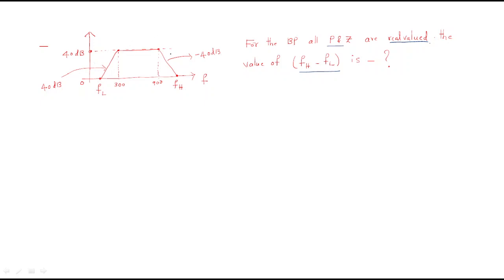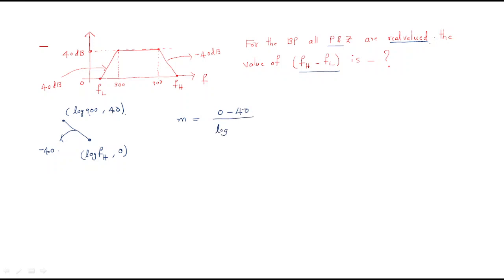Consider the first slope. The given points are (log fH, 0) and (log 900, 40 dB), and the slope is −40. Using slope = (y2 − y1) / (x2 − x1): −40 = (0 − 40) / (log fH − log 900). So −40 = −40 / (log fH − log 900), which gives log fH − log 900 = 1.